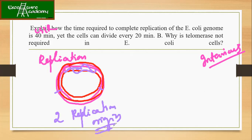Because of this, even though the entire replication is taking 40 minutes, in 20 minutes you divide because in the next 20 minutes the second generation has already started replication. So this is the answer for the first part.